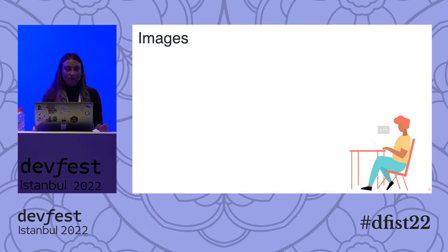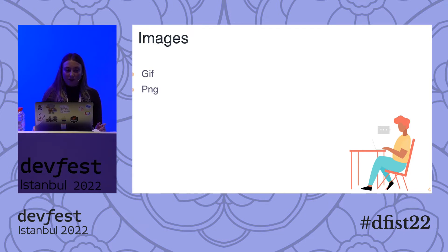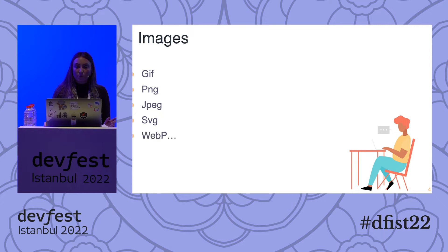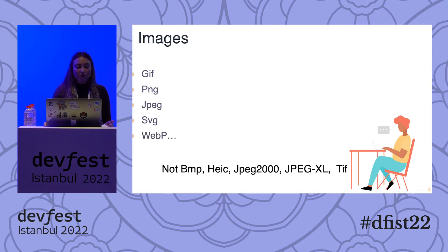In terms of images, there are a lot of different formats that are supported. Firstly, we have GIF, although this is quite rare nowadays and has been replaced by PNG. JPEG, SVG, and WebP are also all supported. However, BMP, HIC, JPEG-2000, JPEG-XL, and TIFF are not supported — although if you are a Mac user, Safari does have TIFF support.